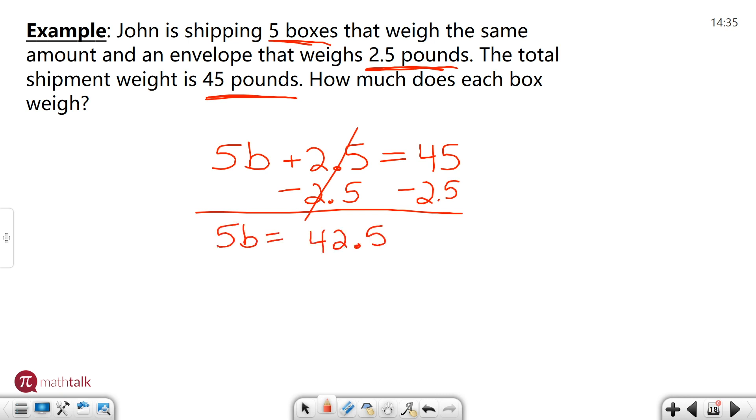Now we got one more step 5 times B so to solve it do the opposite divide and then we get left with B equals type in 42.5 divided by 5 in your calculator you're going to get 8.5 pounds. Make sure you include your units when you're looking at variables like this. So each box weighs eight and a half pounds okay so that's one type of problem you're going to see.